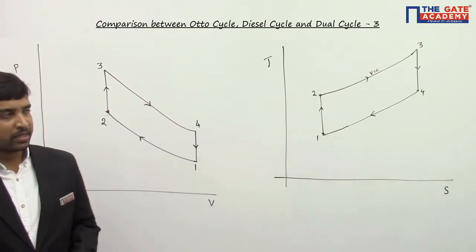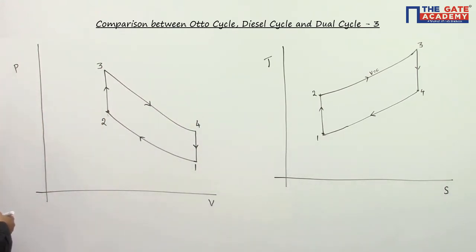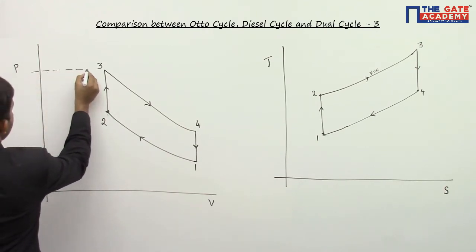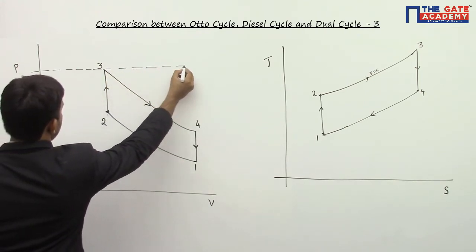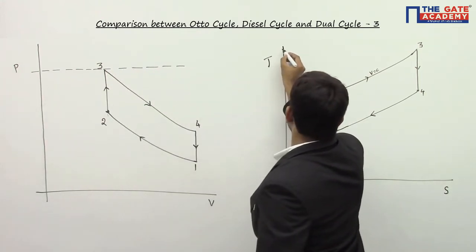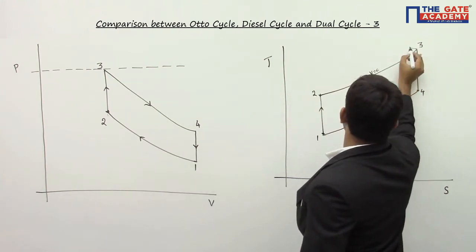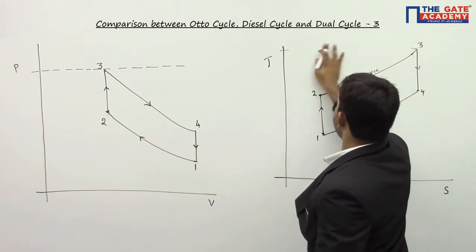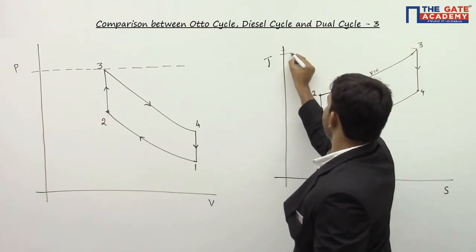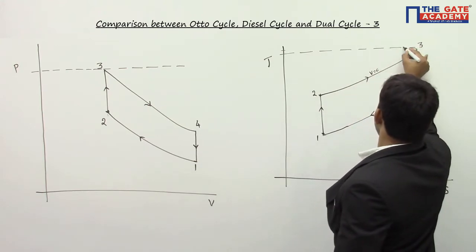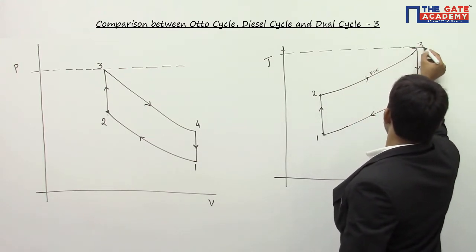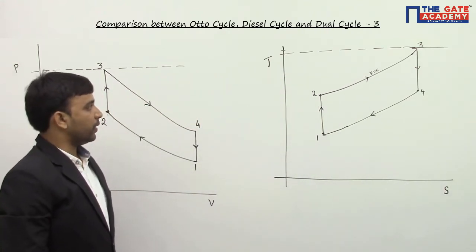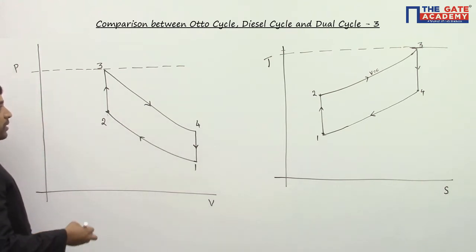The constraints are: maximum pressure is the same and maximum temperature is also the same for all cycles. So this is the maximum pressure and this is the maximum temperature in all three cycles. For the same maximum pressure and same maximum temperature, we want to find which cycle gives maximum efficiency and maximum work output.